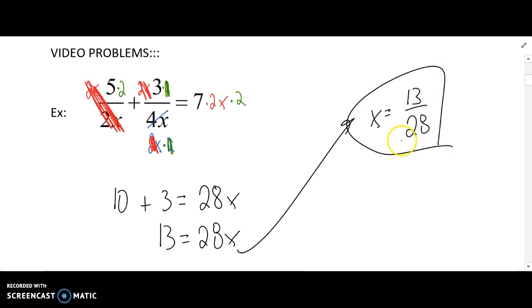If I go back to the original problem and check — if I plug this number in for x, does that make either one of the denominators 0? It doesn't, so I know that this is not an extraneous solution.